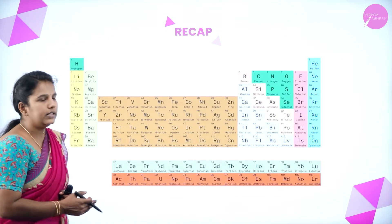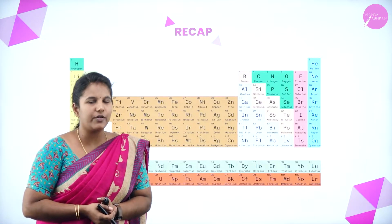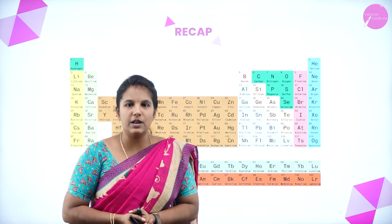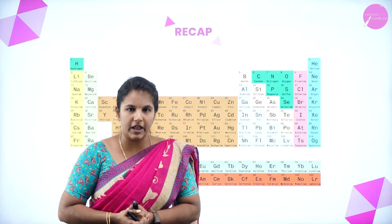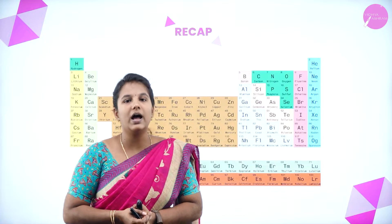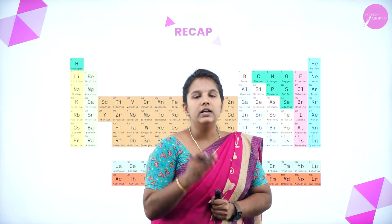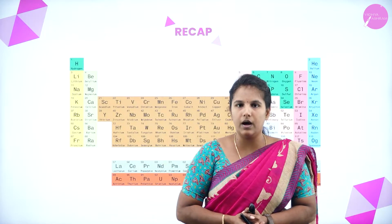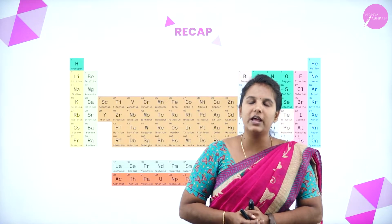We have already learned that Henry Moseley, in the year 1907, while doing his experiment with x-ray diffraction studies, came to know that atomic number is a fundamental property of an element. Instead of using atomic masses, he used atomic number, showing that the chemical and physical properties of an element are periodic functions of its atomic number. He arranged the elements in the increasing order of their atomic number.